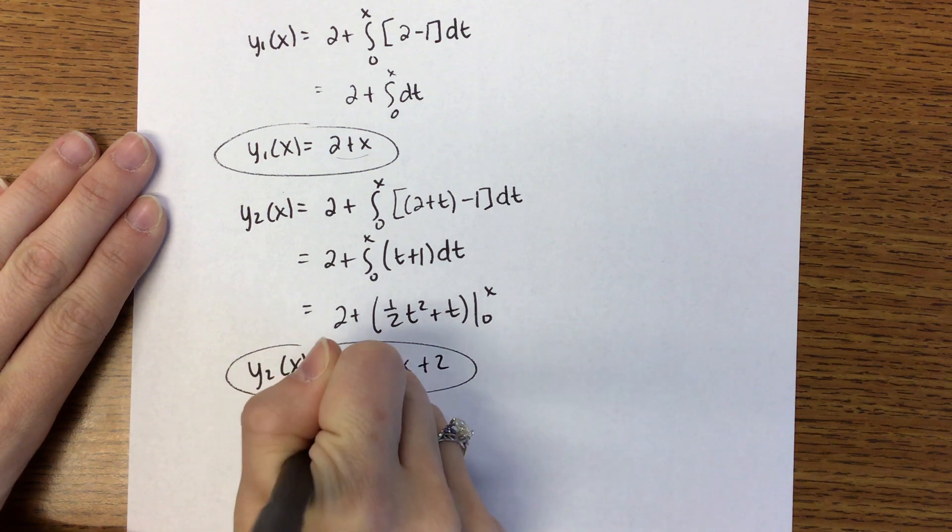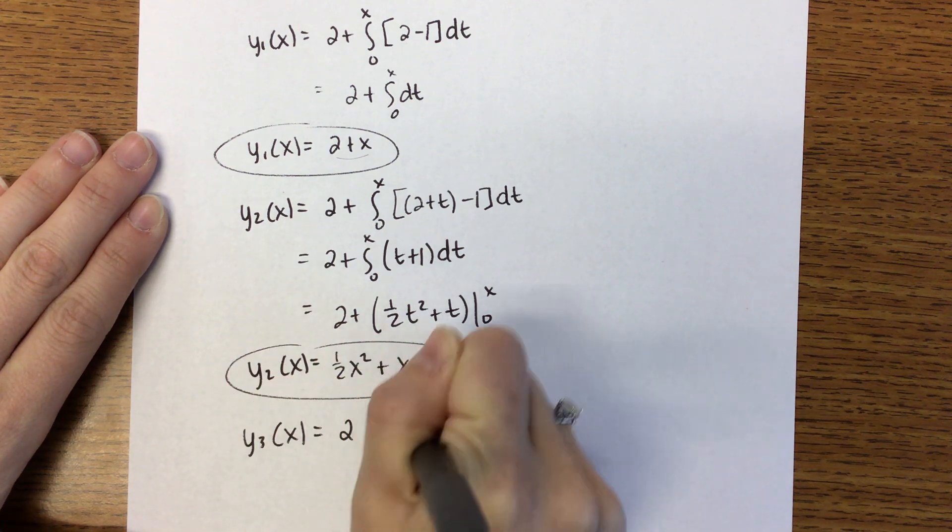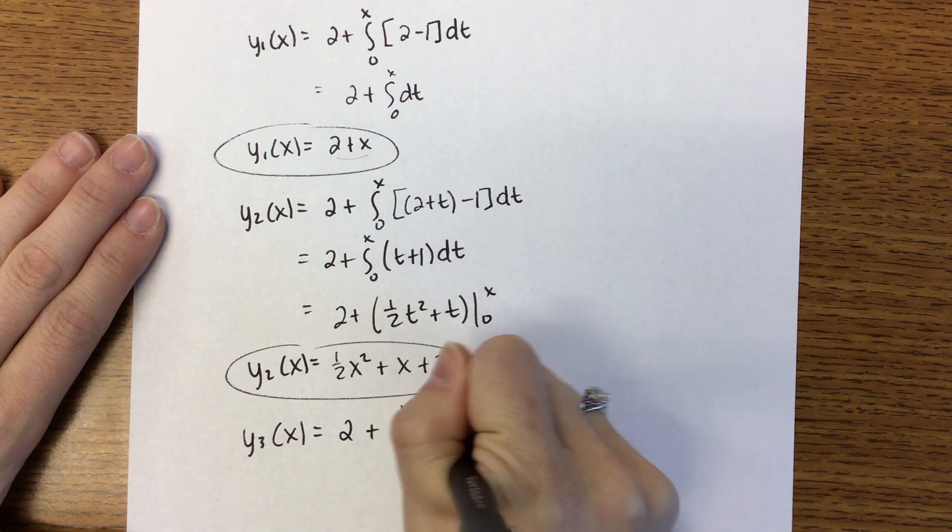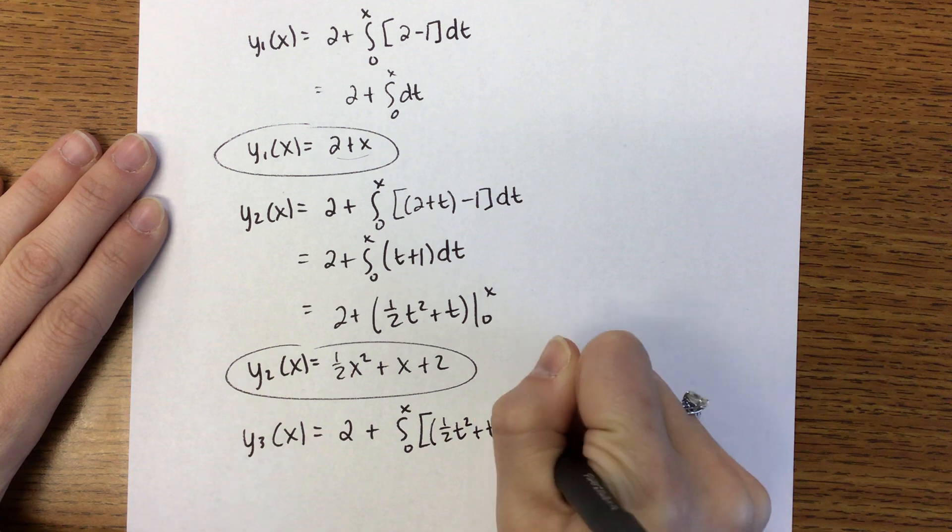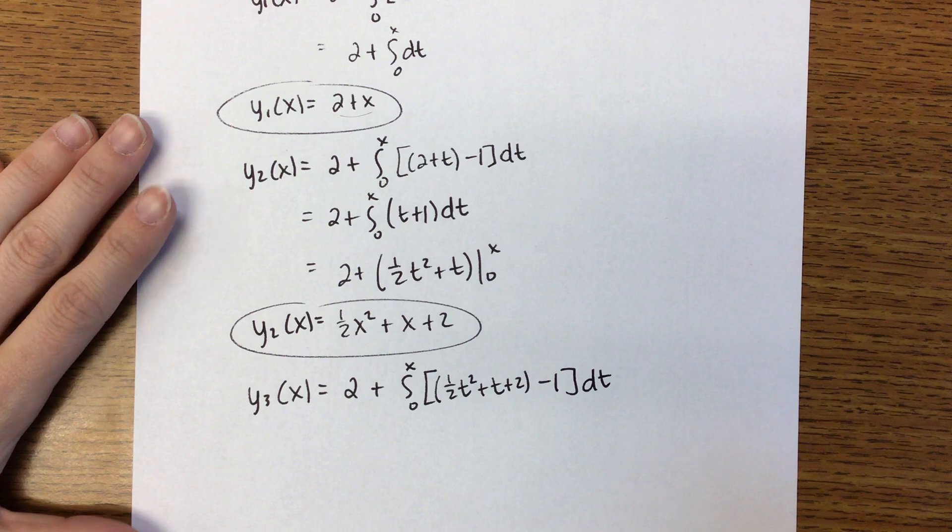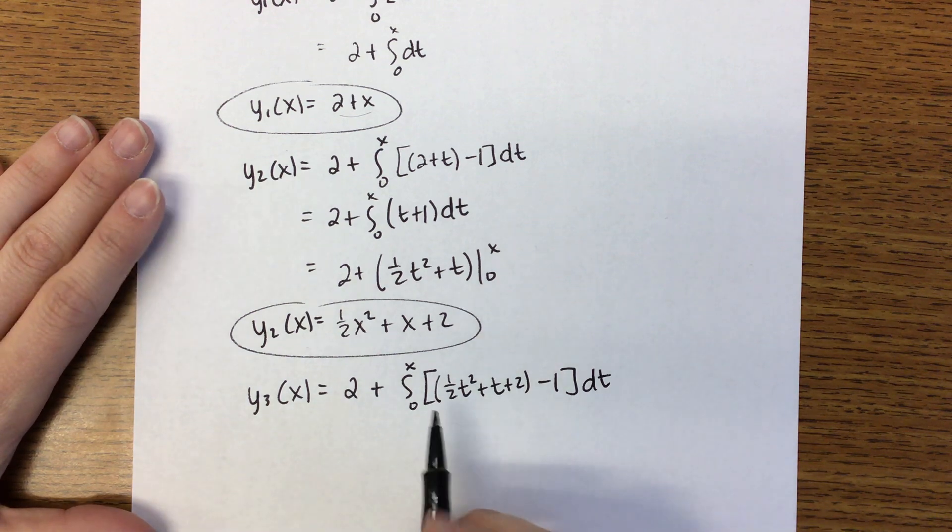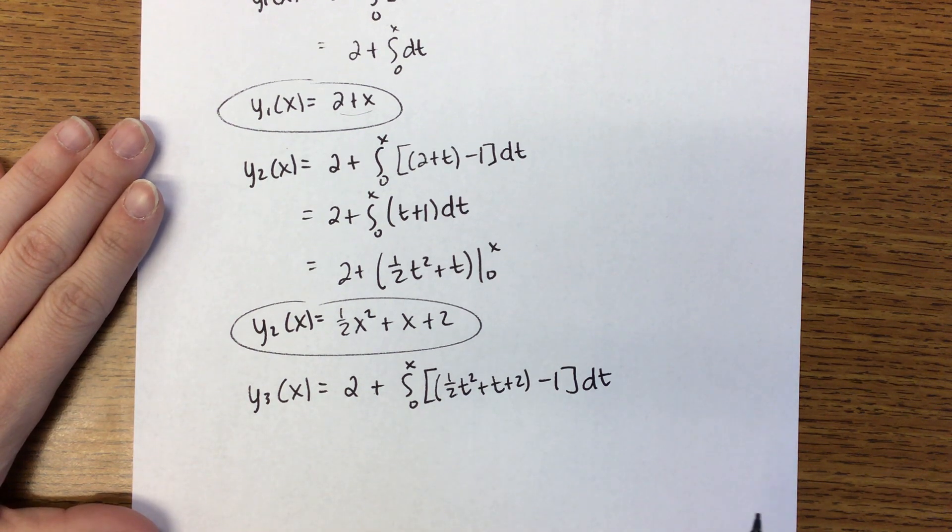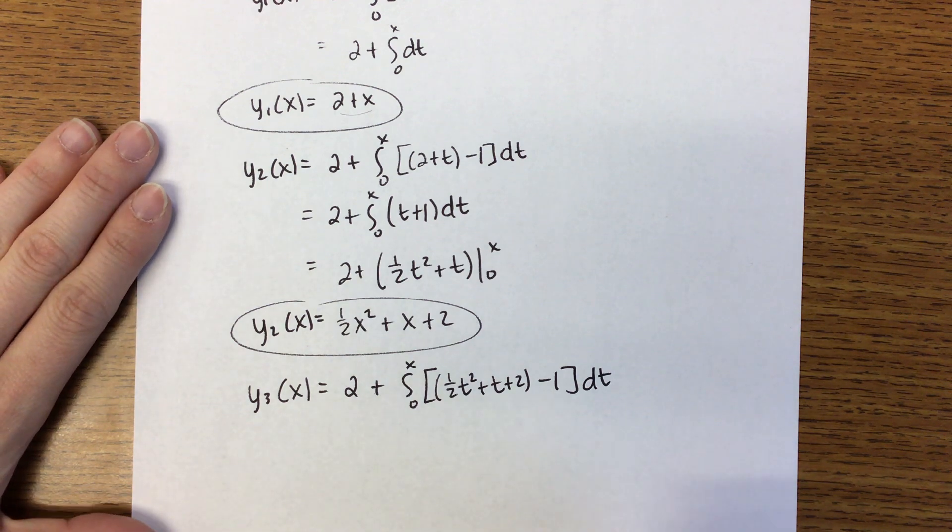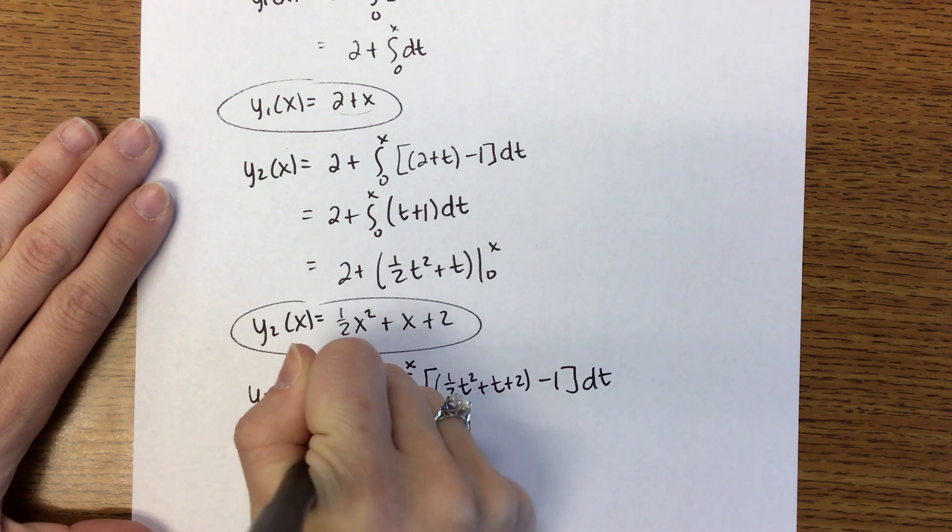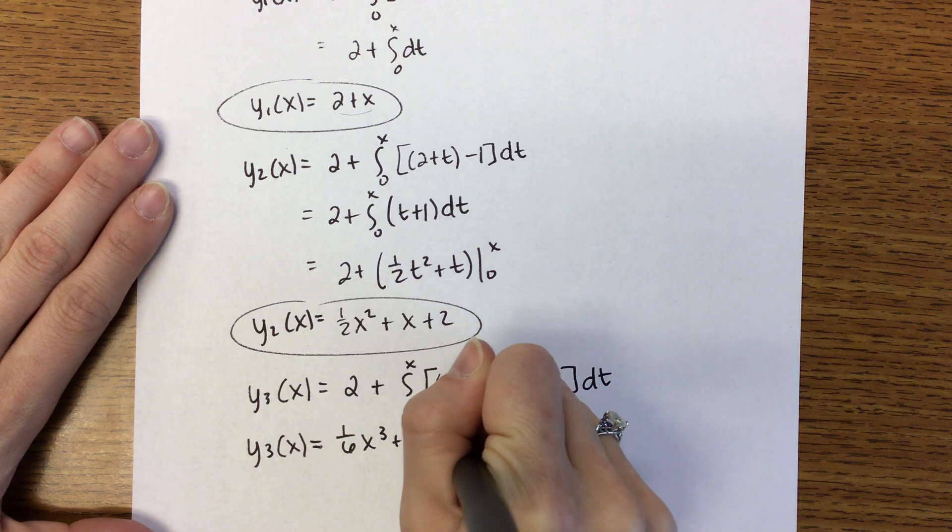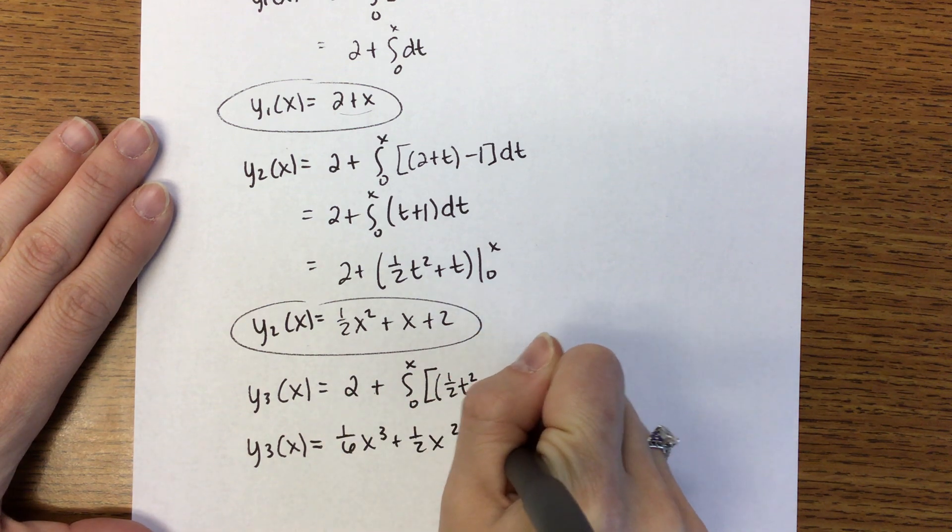Y3 of X, then, is 2 plus the integral from 0 to X. Use the previous approximation. So 1 half T squared plus T plus 2 subtract 1. We get the idea of simplifying and integrating everything, right? So are you okay if I just tell you what the result ends up being? Y3 of X ends up being 1 sixth X cubed plus 1 half X squared add X add 2.